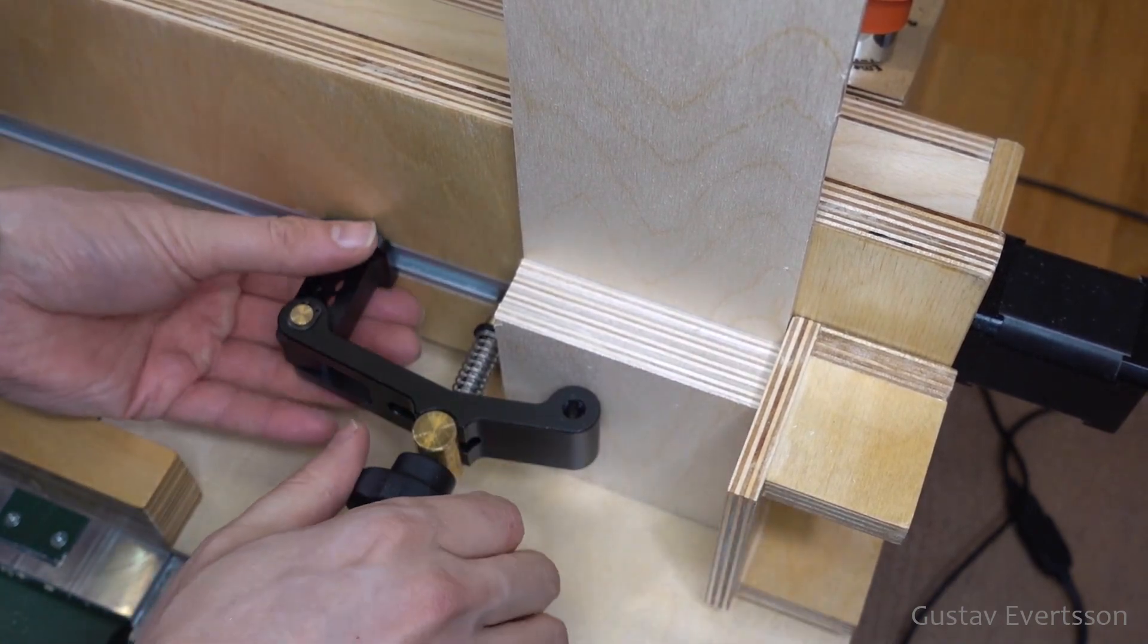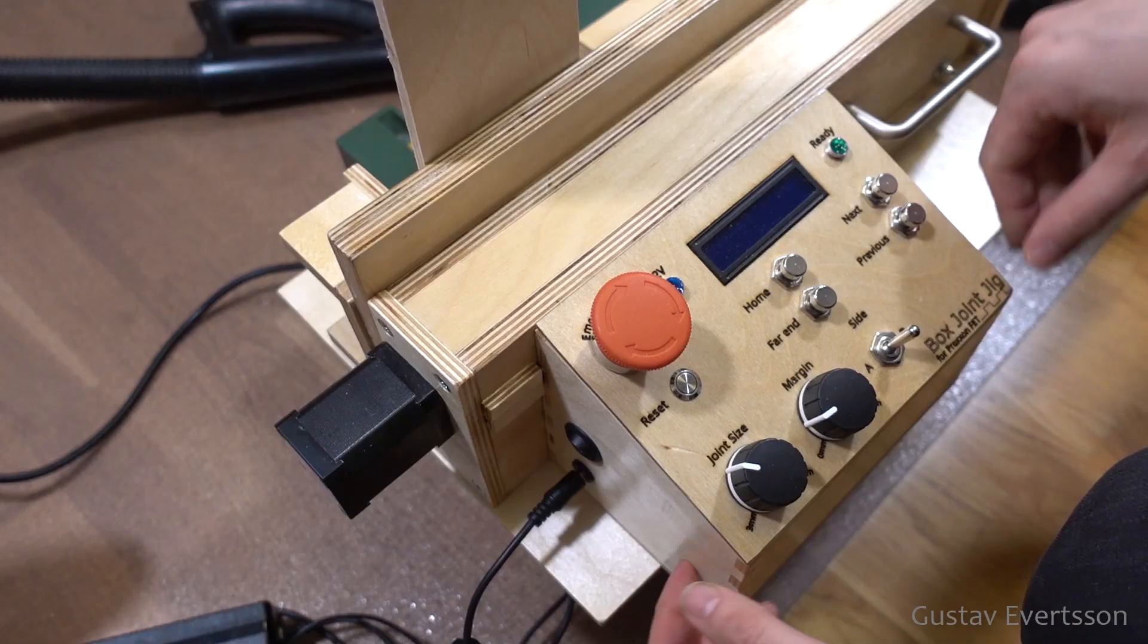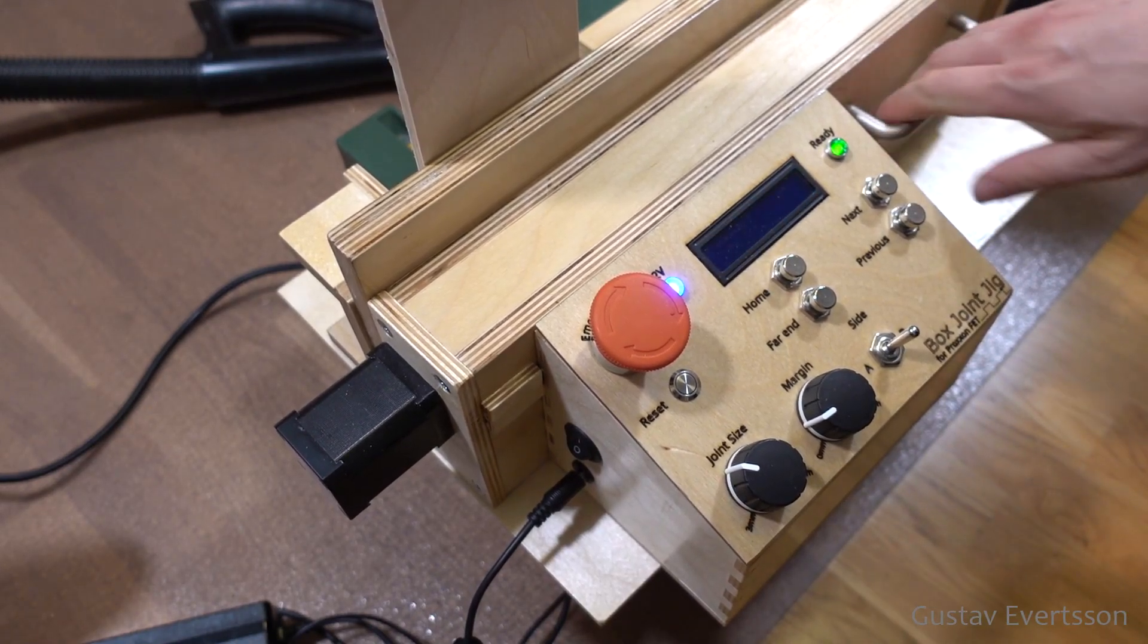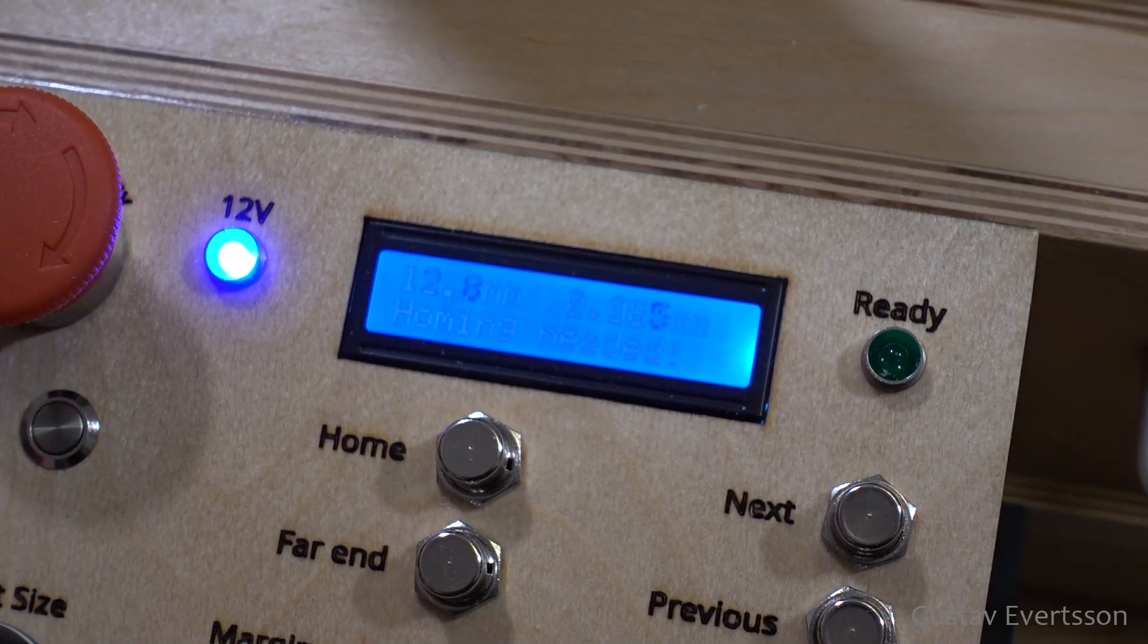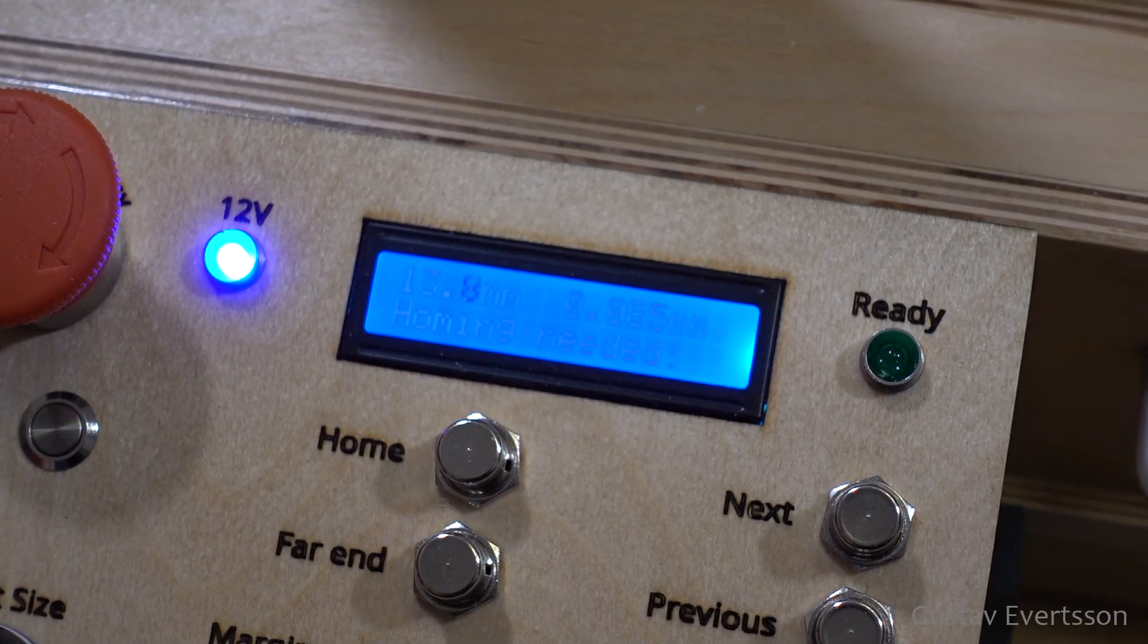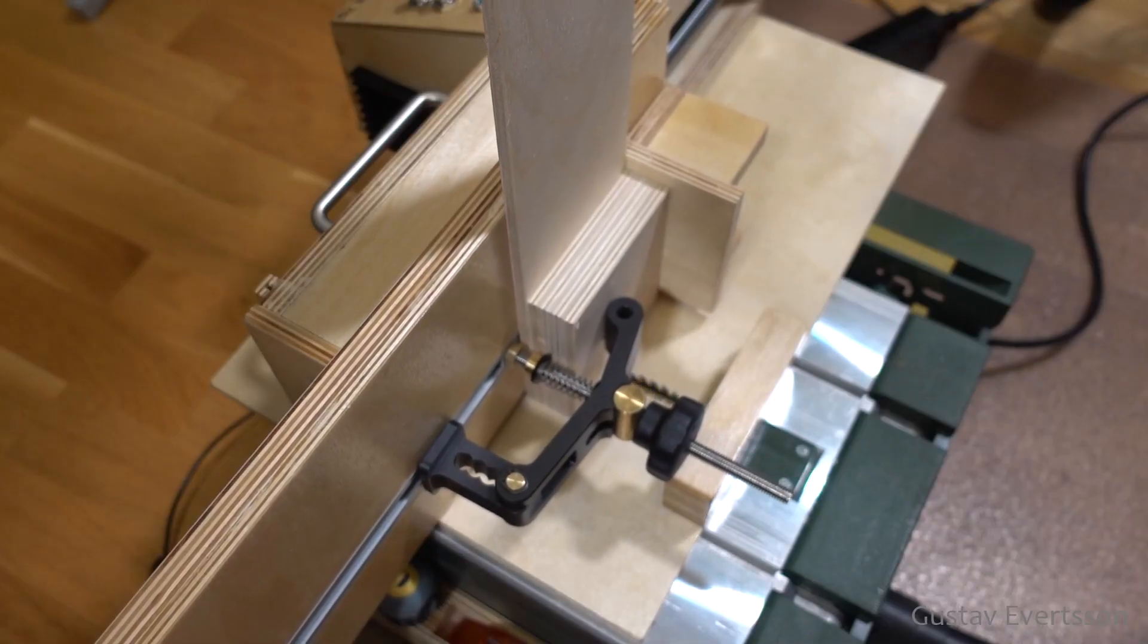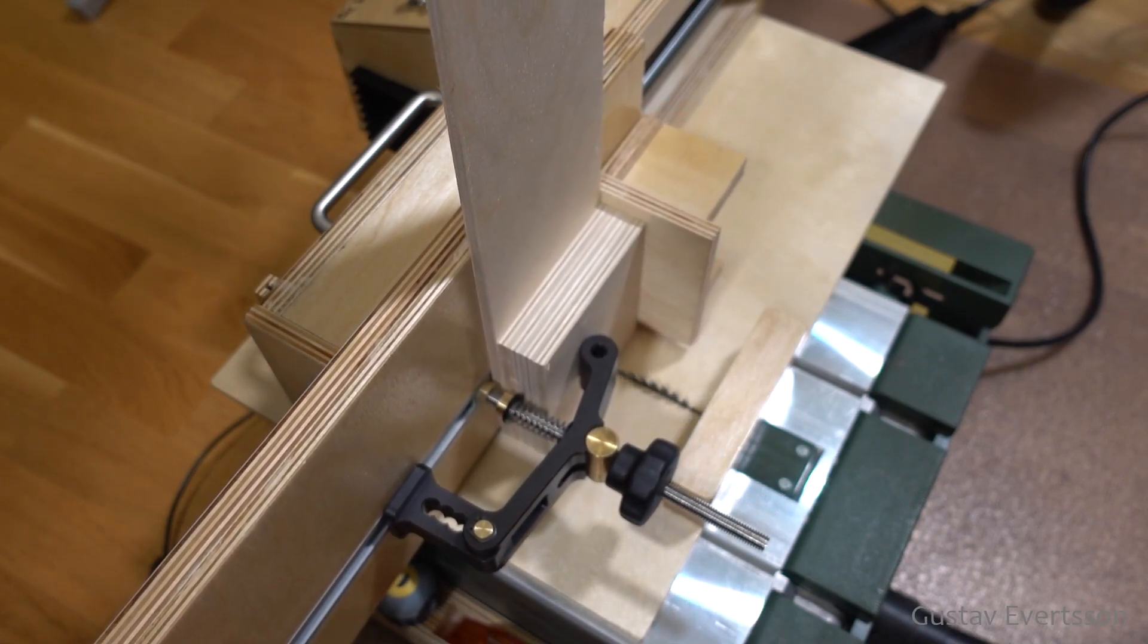Now it is time to power up the jig and set the parameters. We set the width and margin, let's say 14 millimeters and a little less than 0.1 millimeters for margin, that should work. It was tricky to film the LCD display, it is much clearer in real life. We select side A and when pressing the home button the machine moves to the first cut position.